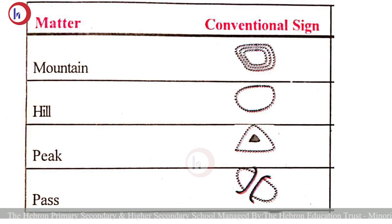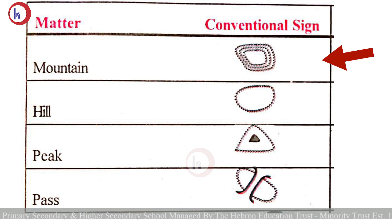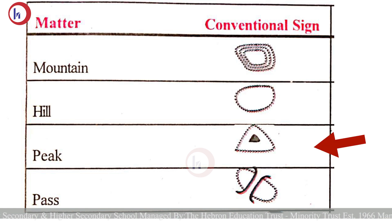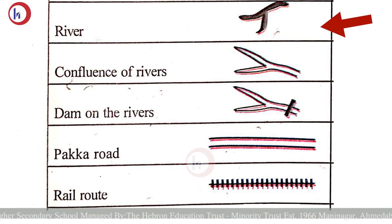Here are different conventional signs. Let us learn how to draw them. First is mountain: draw three oval shapes, one into another without any gap. Second is hill: draw one oval shape with a dotted circle without any gap. Third is peak: draw a solid black circle encircled by a dotted triangle outside without any gap. Pass is a route through the mountain range — draw a route and on both sides draw the symbol of mountain dotted without any gap. This is the sign of a river.